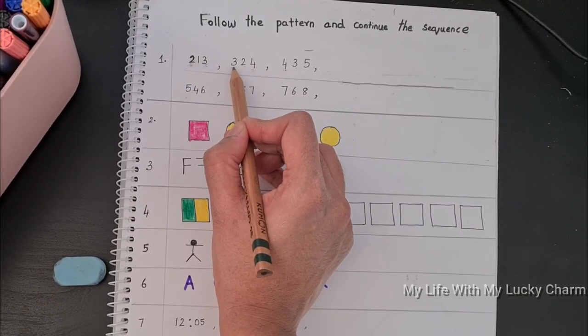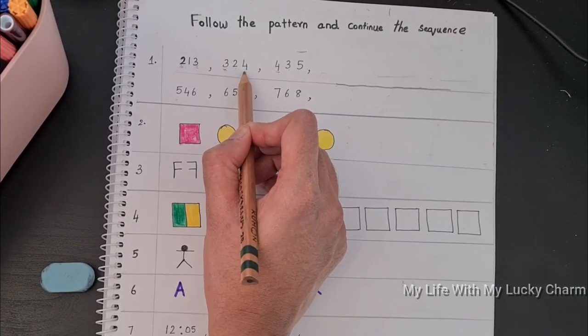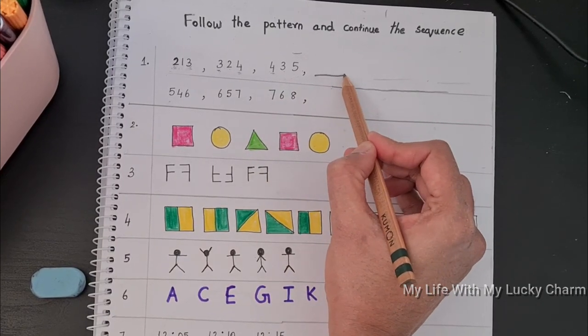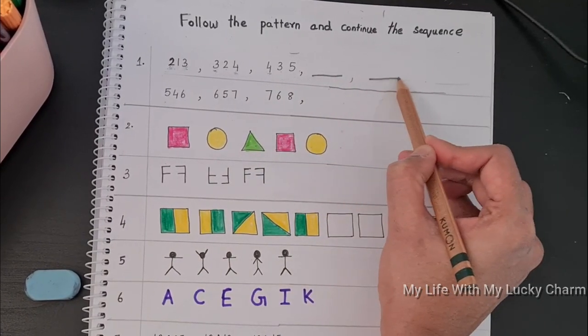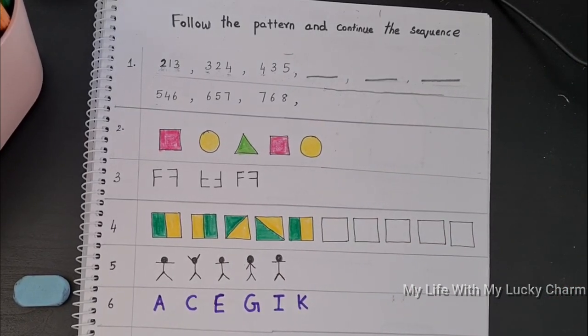That is, 3 less than 1 is 2, and 3 more than 1 will be 4. So keeping this in mind, he needs to figure out what comes here, here, and here. That's how it goes. So now let's see how he works on it.